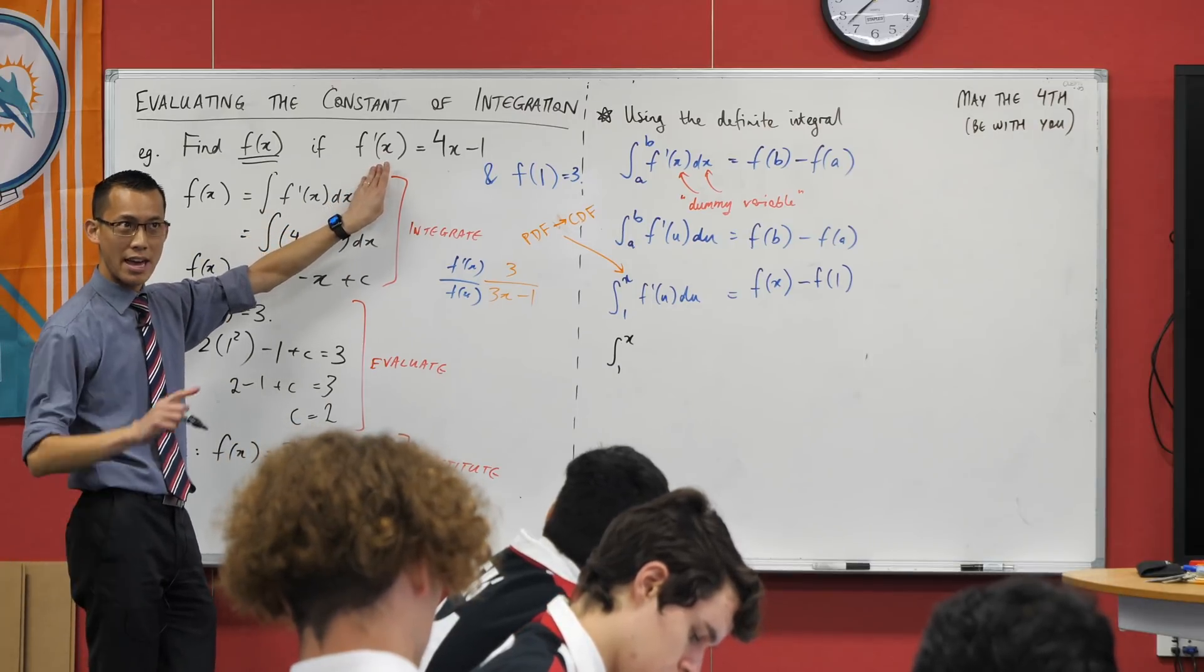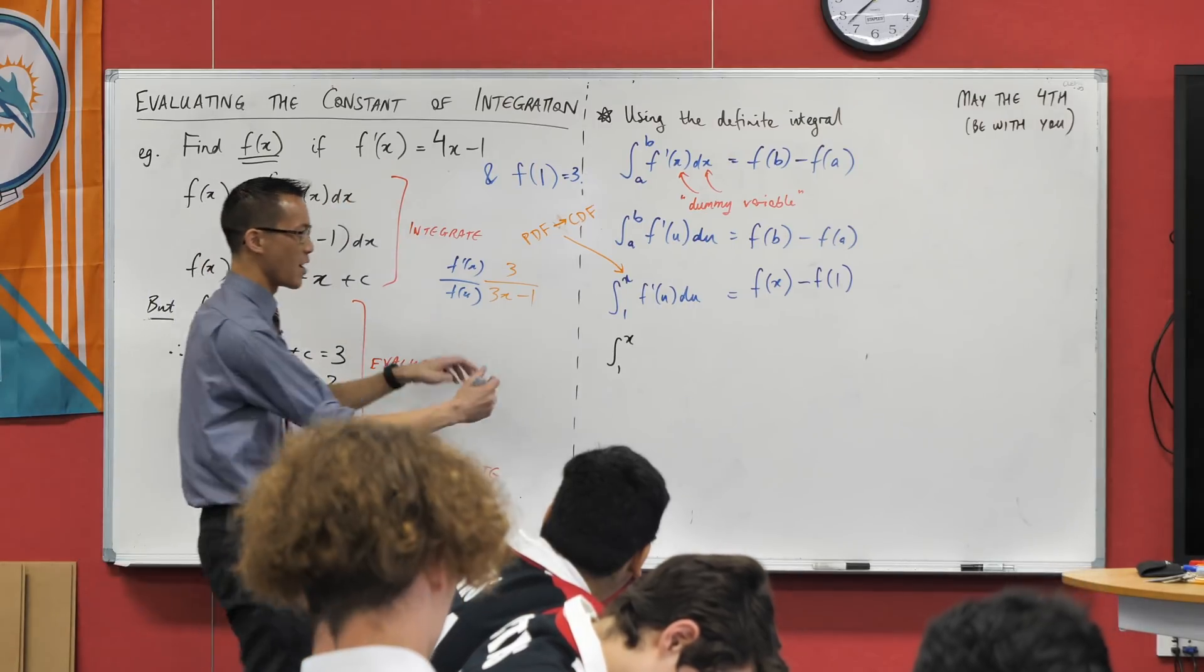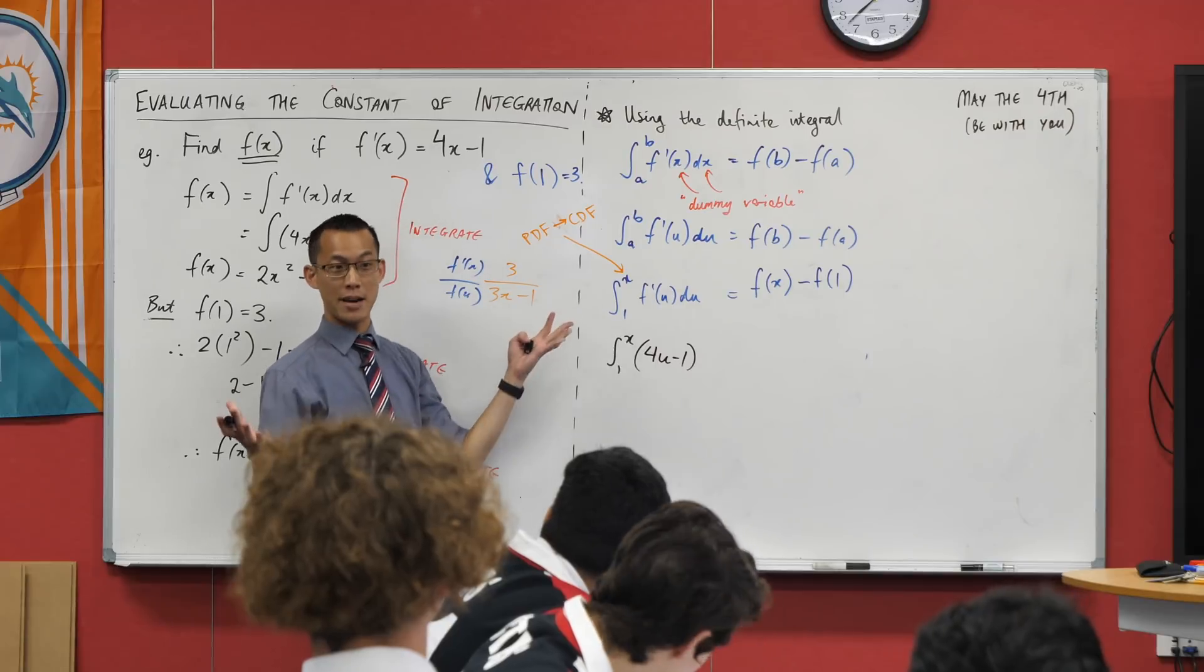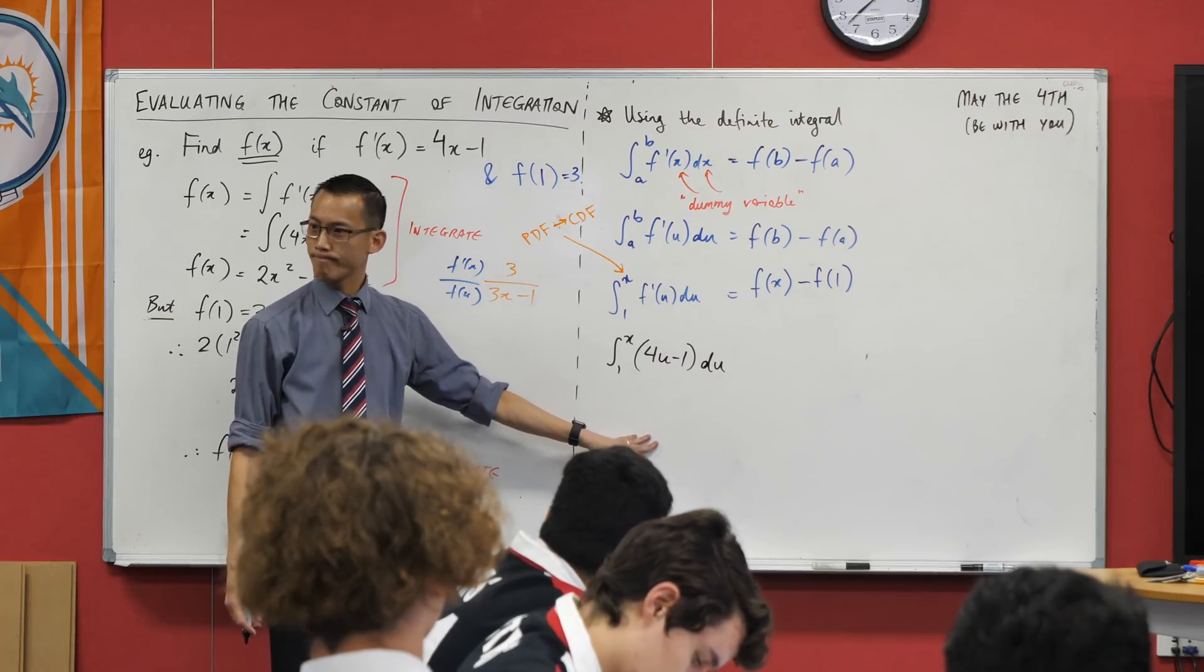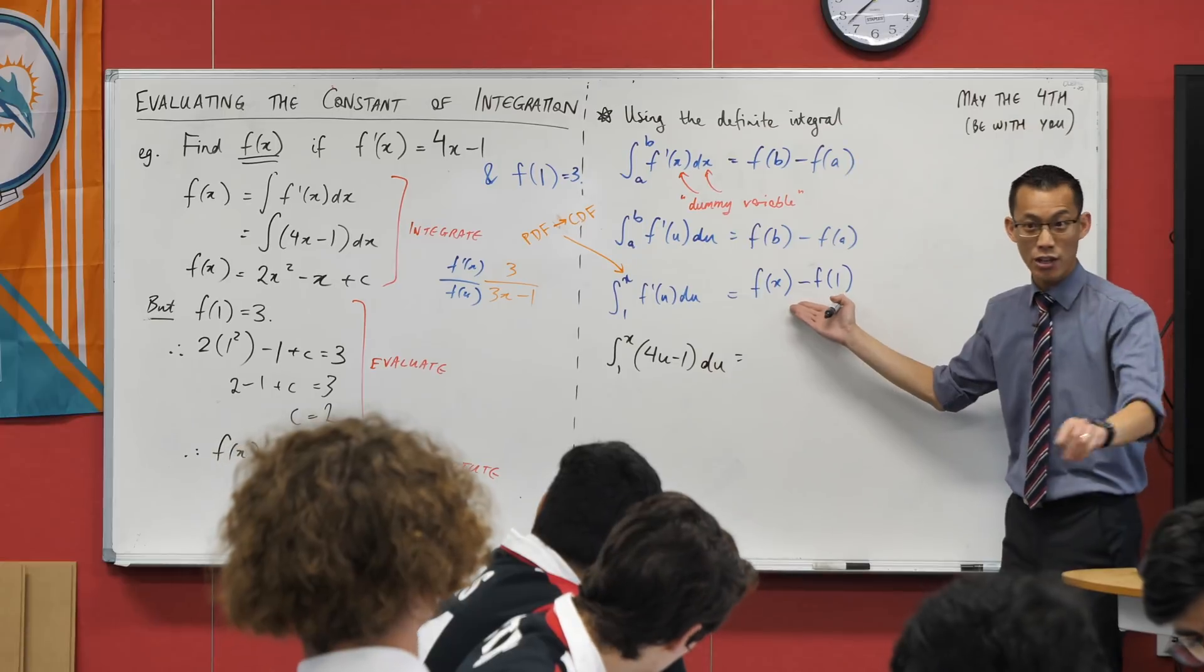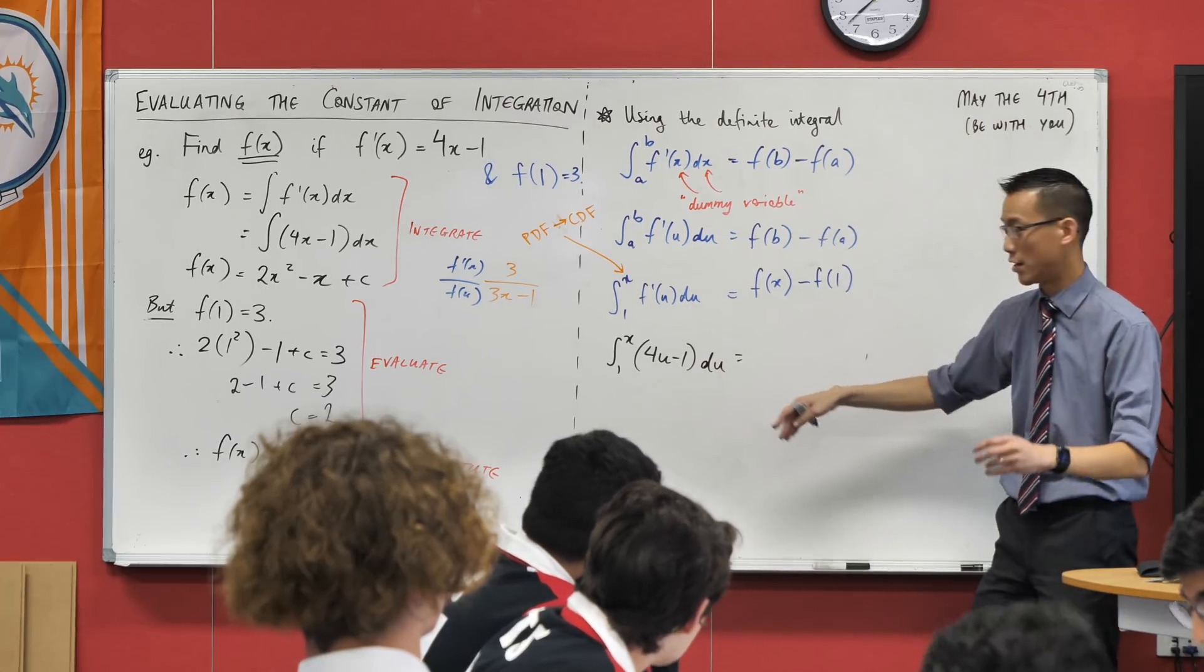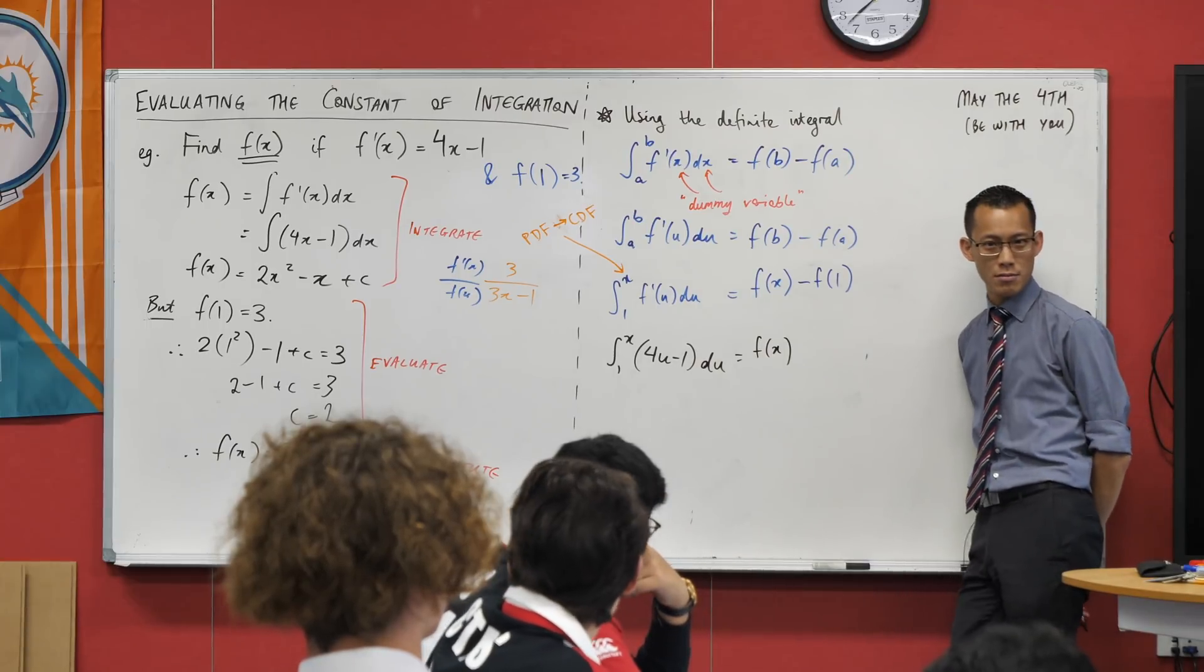Here we go. I'm going to integrate from 1 to x. Now f dash of u—I know what f dash of x is, so f dash of u, I just replace all the x's with u. So I'm going to write in here 4u minus 1, instead of 4x minus 1. And I'm doing it with respect to u. All right, great. Over here on the right hand side, I've got f of x. That's not going to change. That's the thing I want. This is going to become the subject of our equation at the end, and I'll be finished. So I'm just going to write f of x there.